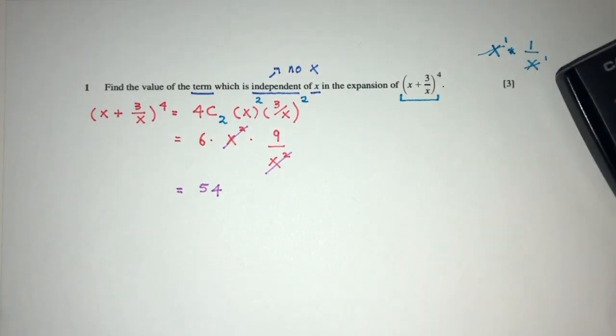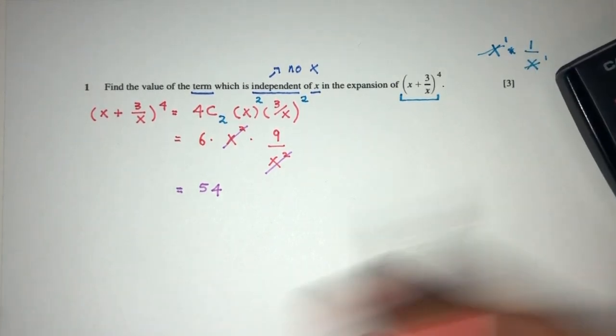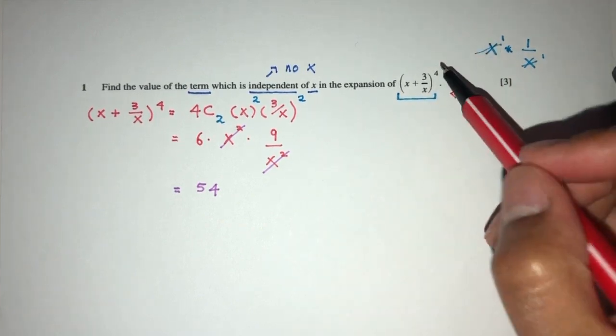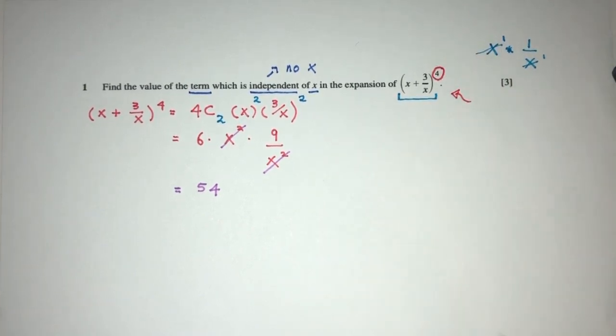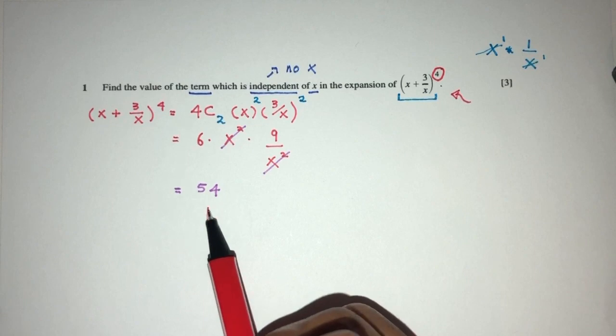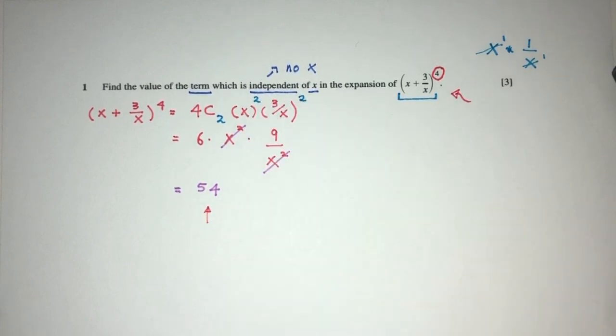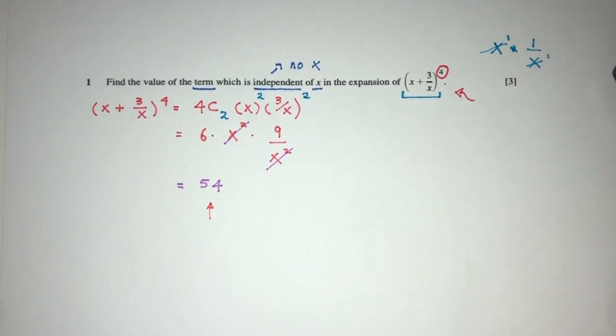Now again, this is only one way of doing that. However, if you guys would like to expand the whole thing, you can also do that because it has only five terms in total. So it will not be that hard. You can always expand everything and then choose the term which does not have x, which will be independent of x in this question.